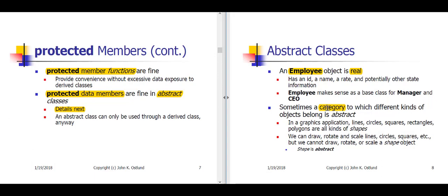Sometimes, though, some kind of category that it makes sense for us to talk about is abstract rather than real. For example, shape is a category of things that might occur in a graphical application. We know that kinds of shapes are lines, circles, squares, rectangles, polygons, and so forth. And we know that given a shape, we should be able to draw one, rotate one, scale it, and transform it to some new location. But we can only do those operations on specific kinds of shapes — we can draw a line, we can draw a circle, we can draw a square, but we can't write down the code for drawing a generic shape.